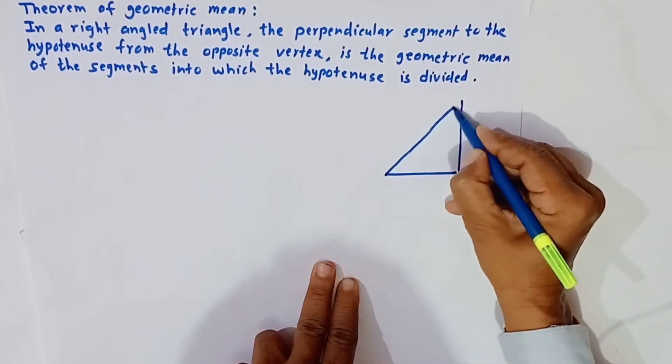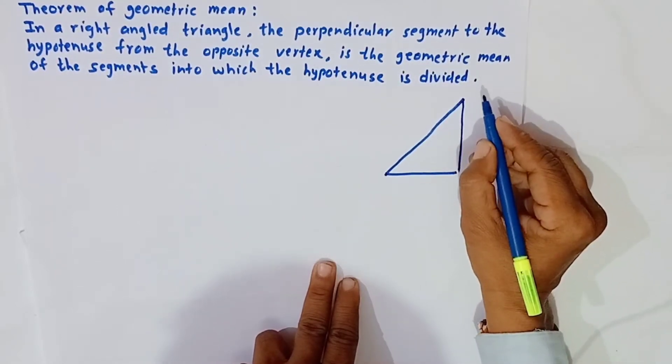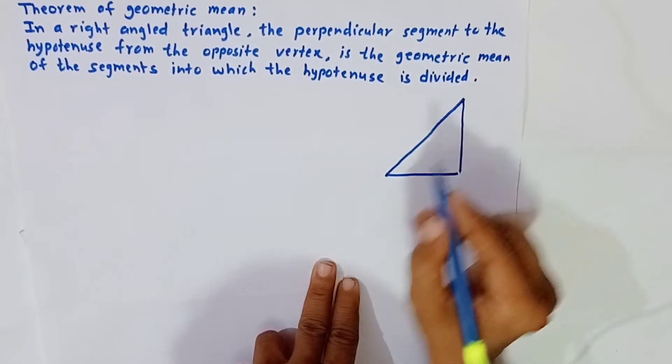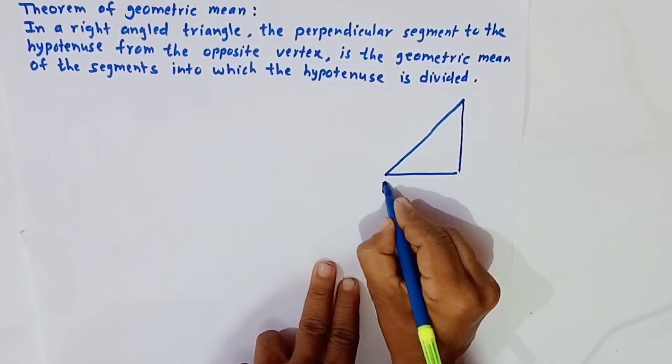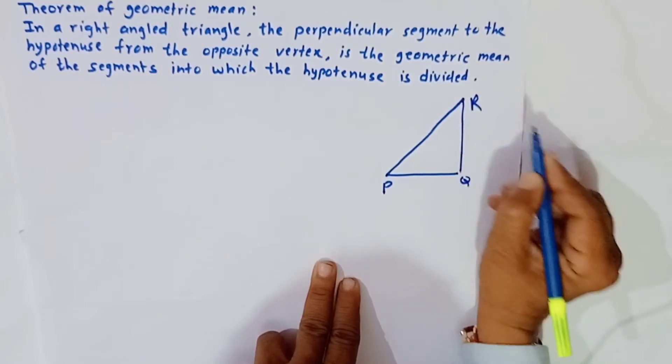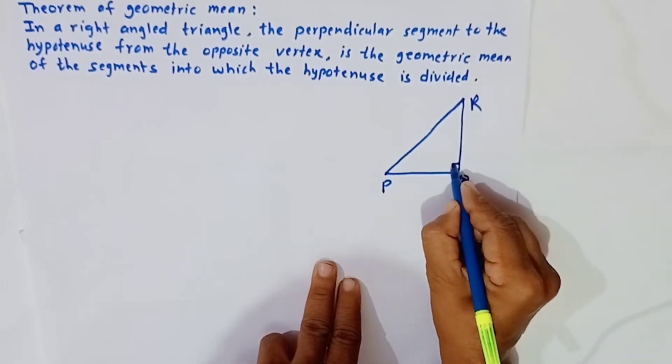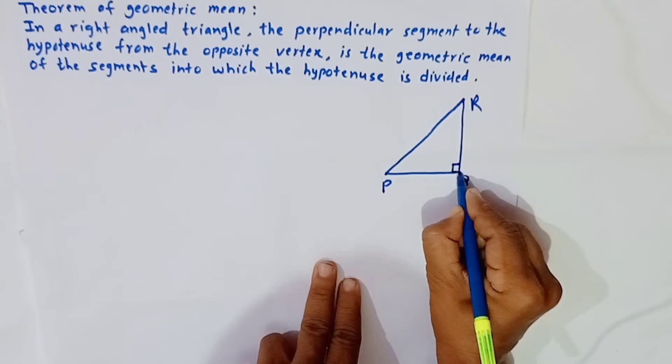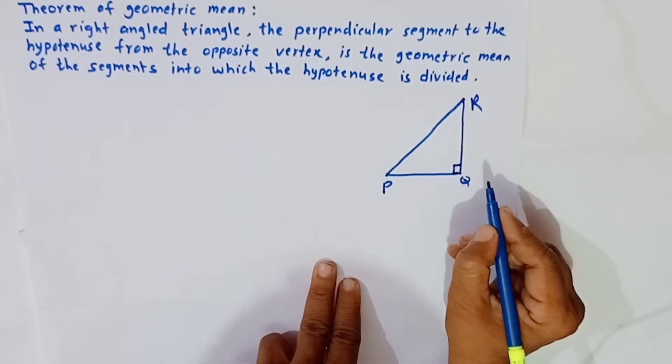We are labeling it triangle PQR. We label it as triangle PQR and consider angle Q as the right angle.